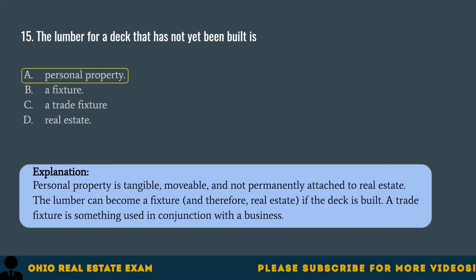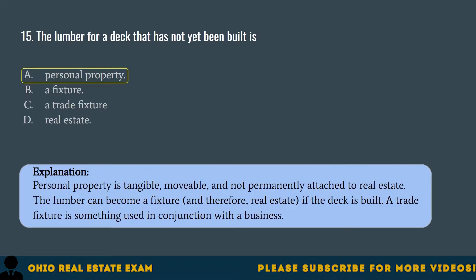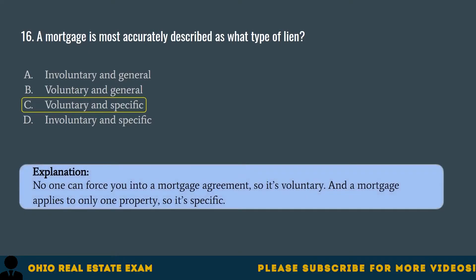Question 16. A mortgage is most accurately described as what type of lien? A. Involuntary and general. B. Voluntary and general. C. Voluntary and specific. D. Involuntary and specific. The correct answer is C. Voluntary and specific. No one can force you into a mortgage agreement, so it's voluntary. And a mortgage applies to only one property, so it's specific.